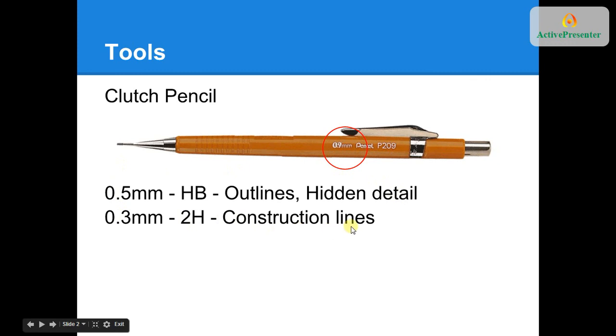Our construction lines, however, are drawn using a 2H. These are our light lines that are drawn as the beginnings of our drawing, as a thinking step. We'll leave these lines, we're not going to erase them. We're going to draw them so light that you can't actually pick them up. Chances are, when the image is scanned using a normal scanner, the construction lines will be so light that you don't pick them up at all.